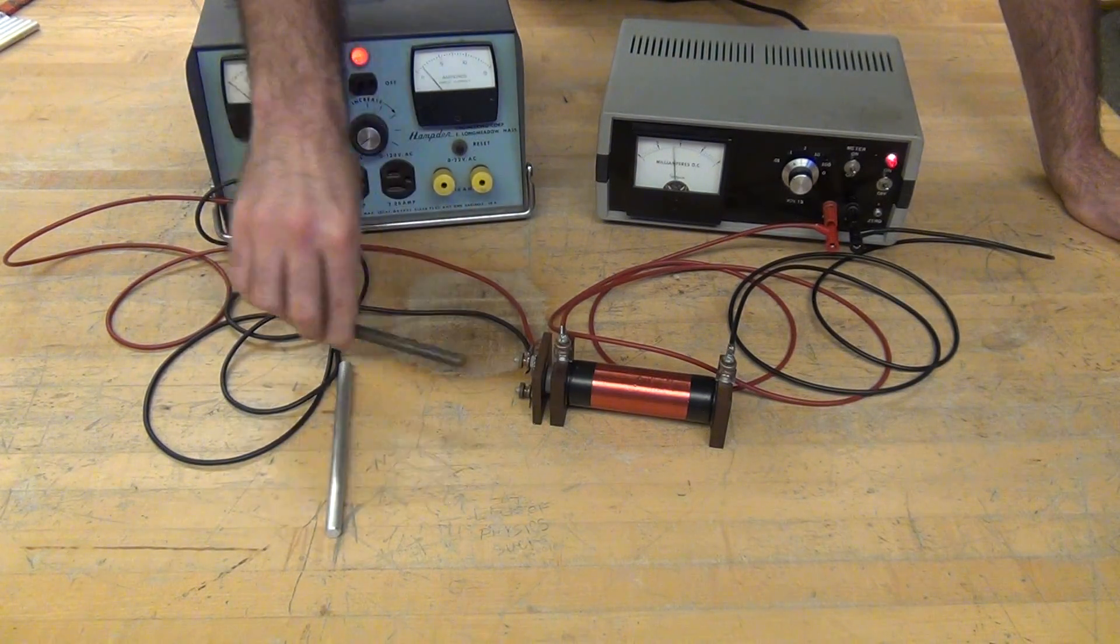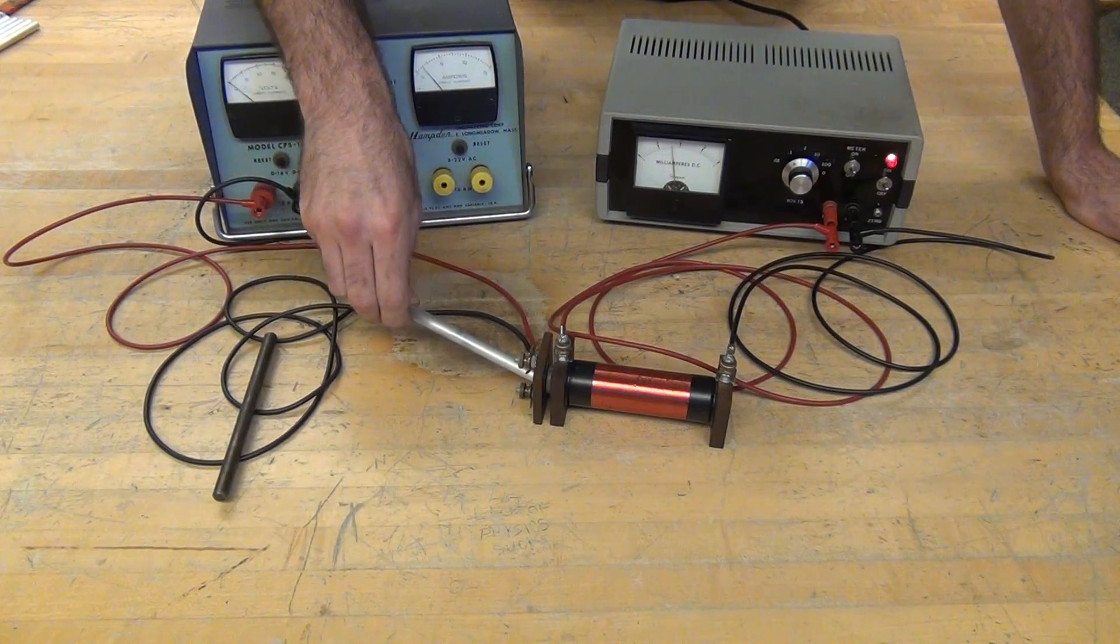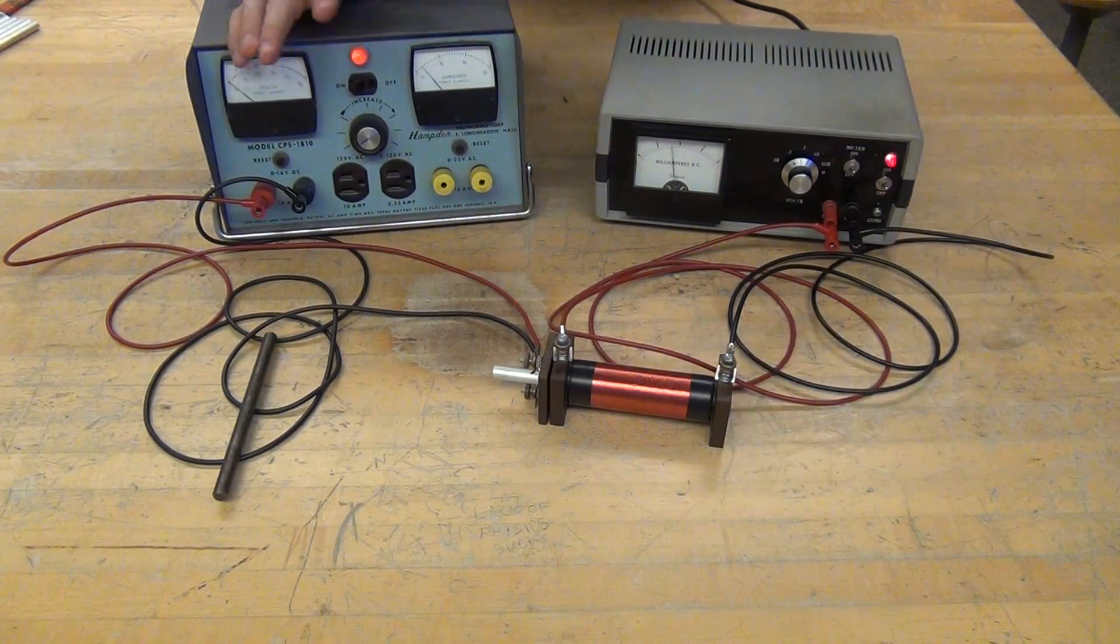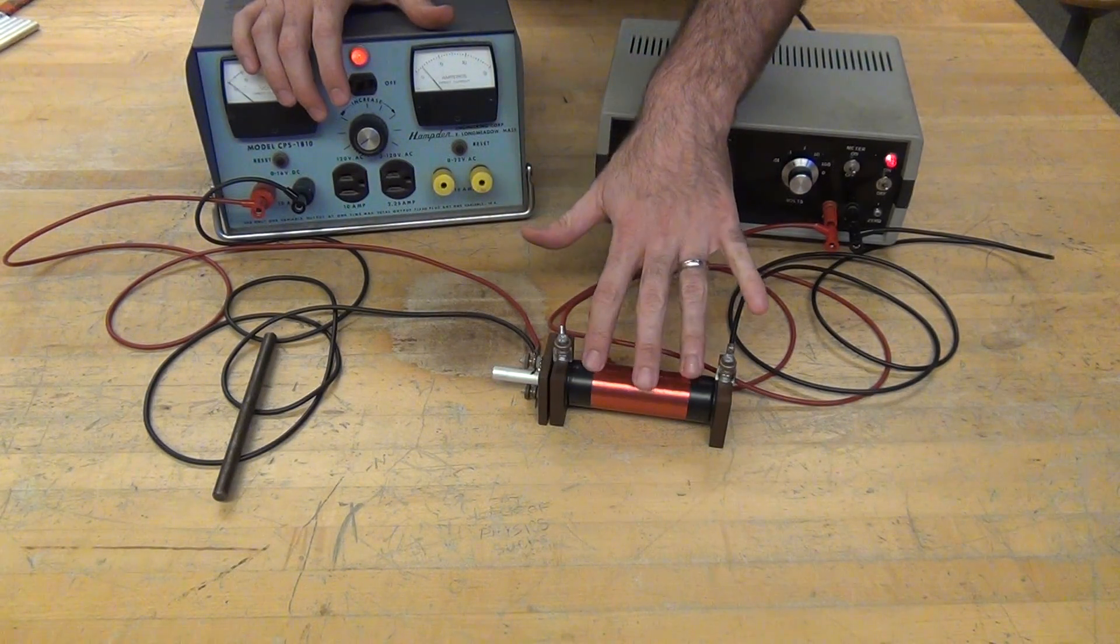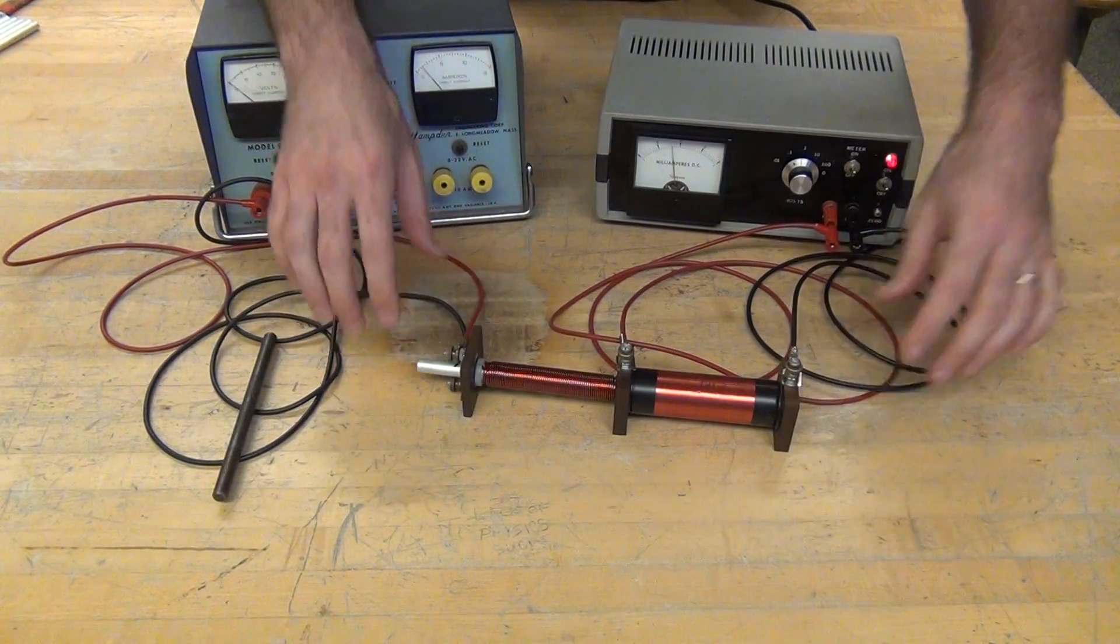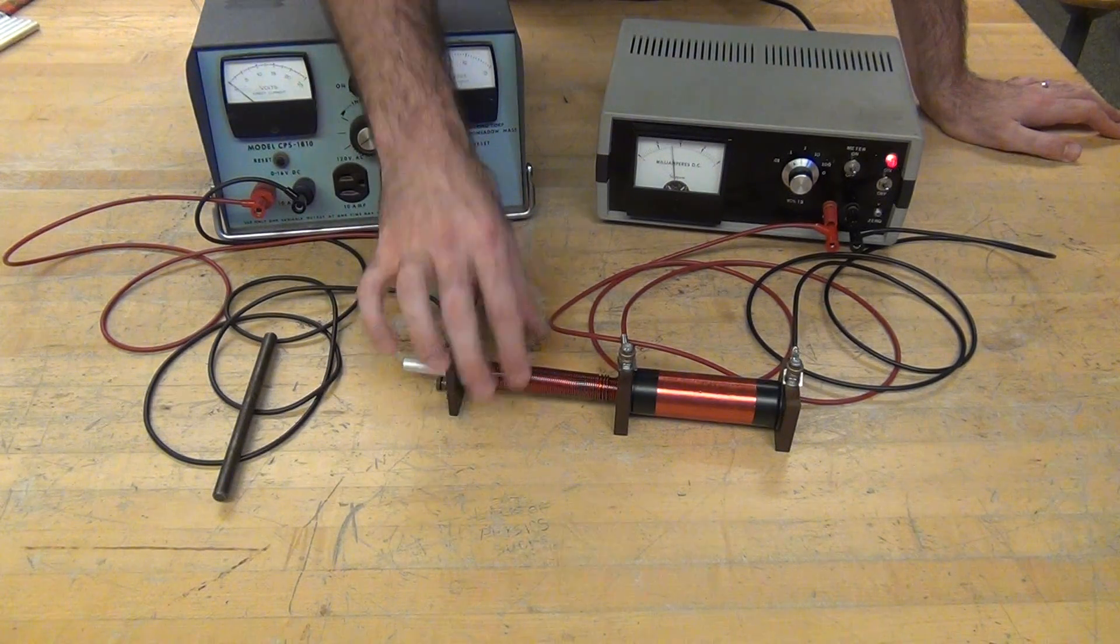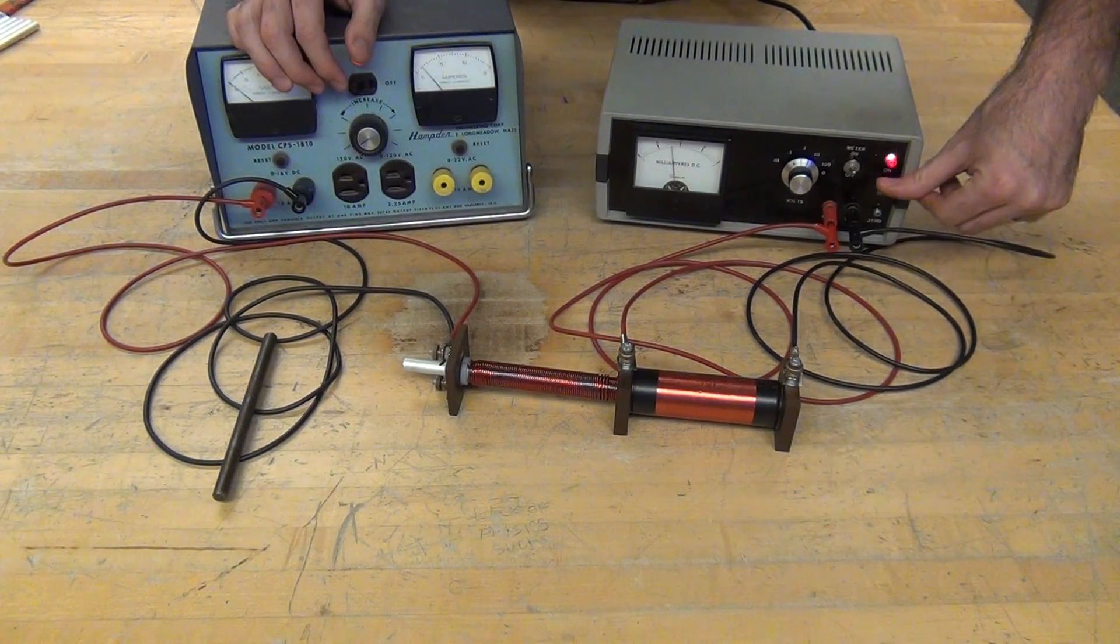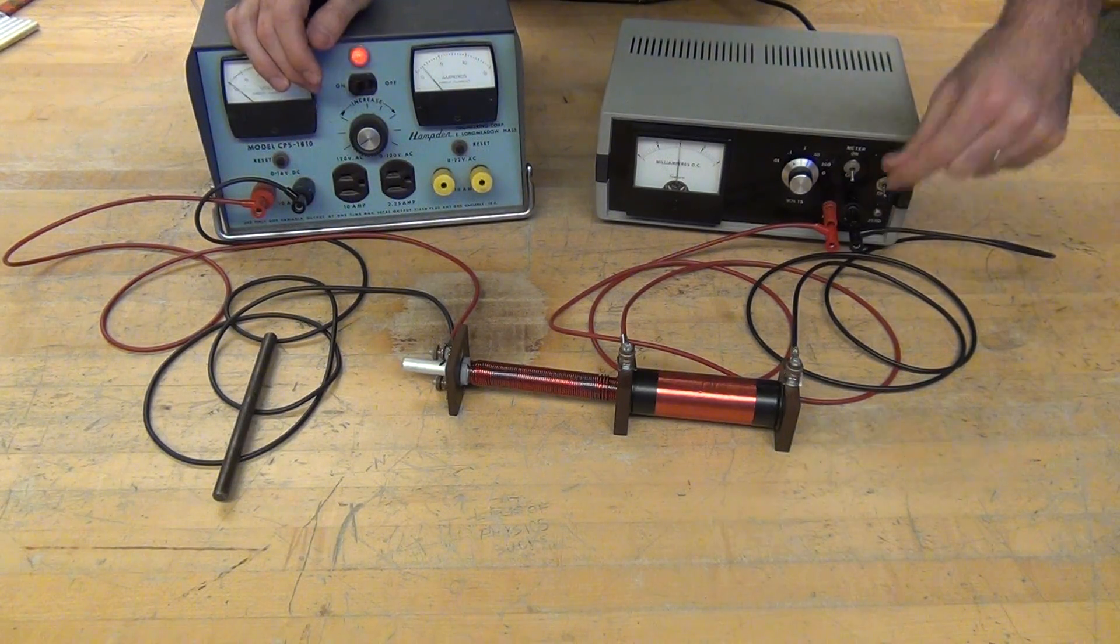And then try the same thing with the aluminum rod. Investigate what type of pickup you get from this coil driving a current through this coil with the Hamden. When you're done, turn everything off.